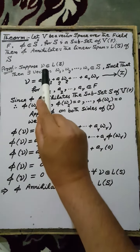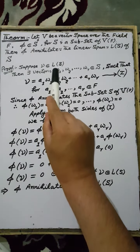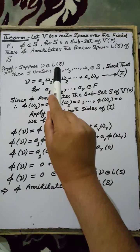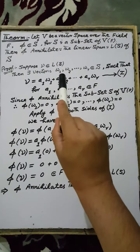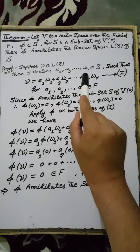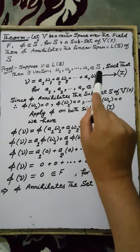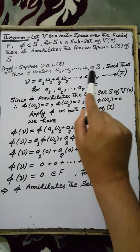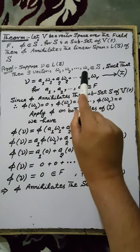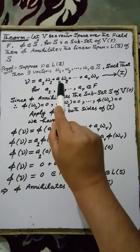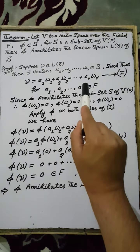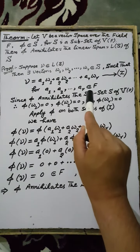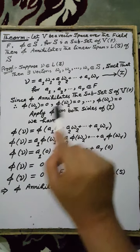Proof. Suppose V be an element contained in the spanning set of the set S. Then by definition, there exist vectors W1, W2, up to WR in the set S such that the linear combination of these elements is equal to V, where A1, A2, up to AR are the scalars.